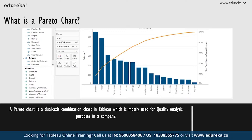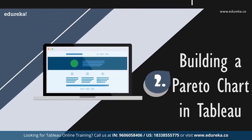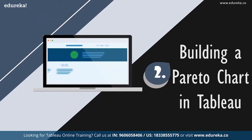Now while this chart type serves a variety of purposes, it is most known for being a part of the seven basic tools of quality control. That is where it majorly dominates. It is traditionally used to identify the biggest opportunities for improvement. Now that we know what it does, let's go ahead and see how it does it.